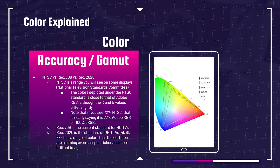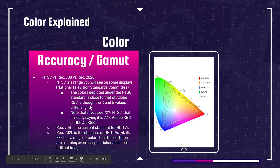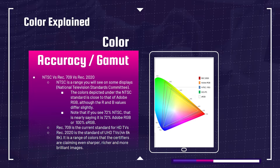Next up, NTSC versus Rec.709 versus Rec.2020. NTSC is a range you will see on some laptop displays — for instance, 'NTSC 72.' This stands for the National Television Standards Committee. The colors depicted under the NTSC standard are very close to Adobe RGB — going a little bit wider towards the blues and a little bit narrower on the reds and yellows. Note that 72 NTSC is nearly saying 72% Adobe RGB or 100% sRGB. It's not exact — it's a slightly different classification — but it gives you a general gauge on how accurate your screen will be.